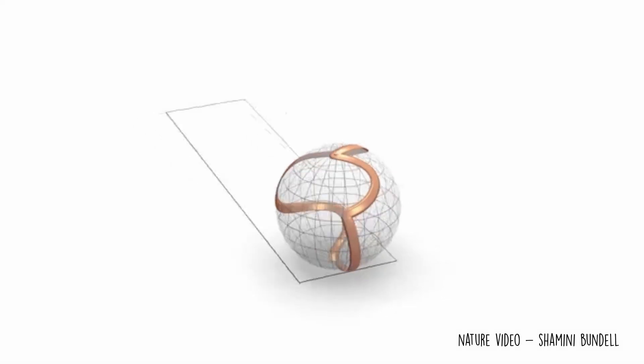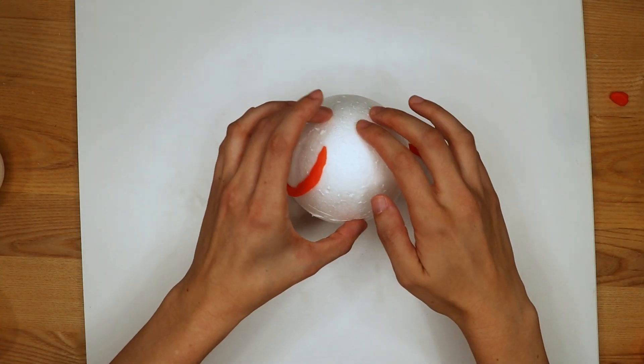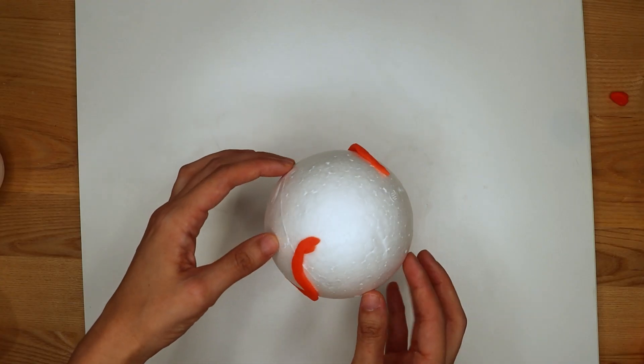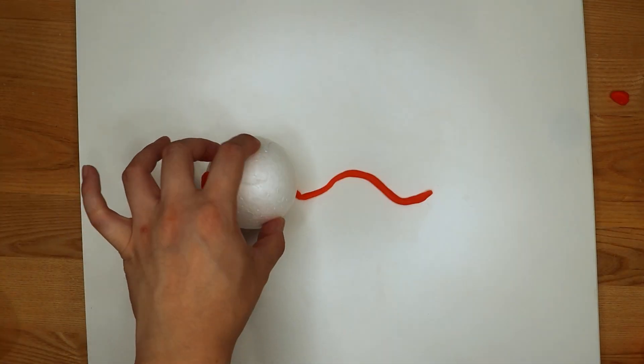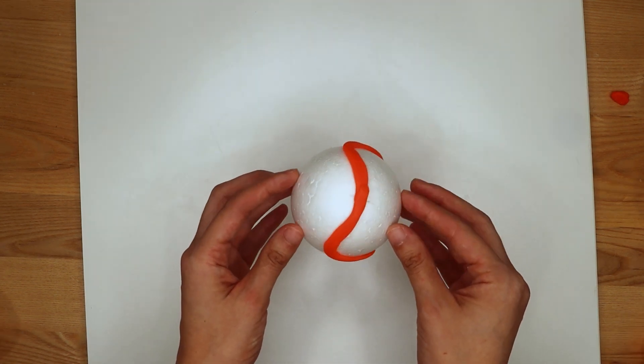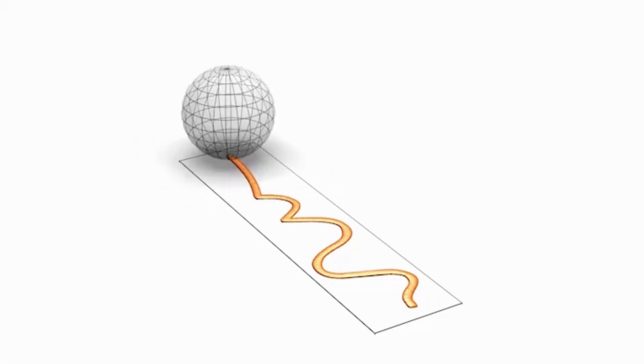For that to happen, the path needs to draw out a closed loop on the sphere. When I roll this ball along my path, you can see that it does not make a closed loop. But when I roll this smaller ball, it does.